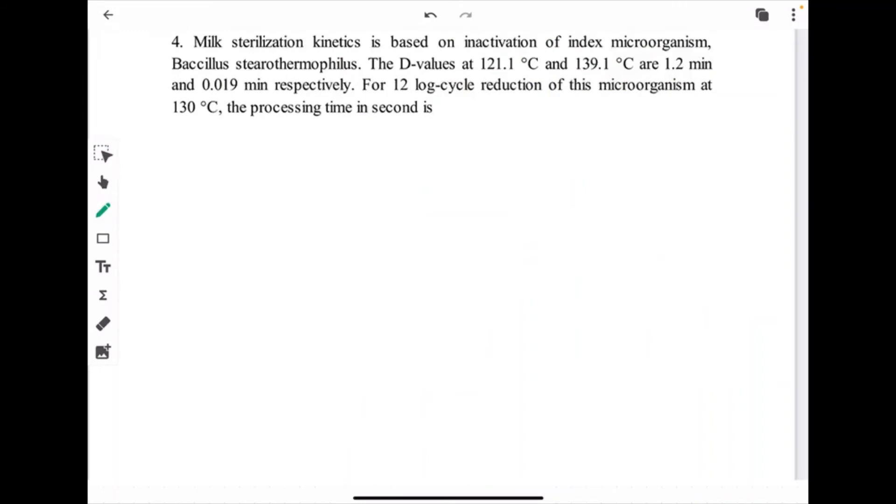Next question is milk sterilization kinetics is based on inactivation of index microorganism Bacillus stearothermophilus. The D values at 121.1 degree Celsius and 139.1 degree Celsius are 1.2 minute and 0.019 minute respectively. For 12 log reduction of this microorganism at 130 degree Celsius, the processing time in second is. So processing time we can find it out: T equals D into log(N/N0) and D will be at 130 degree Celsius we need to find. We don't have the value of D 130 degree Celsius.